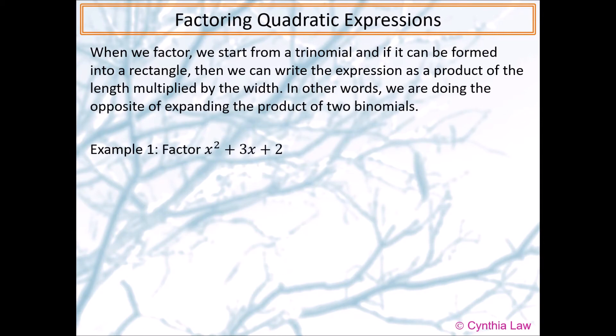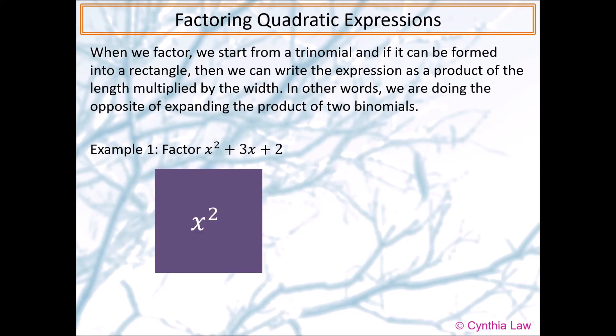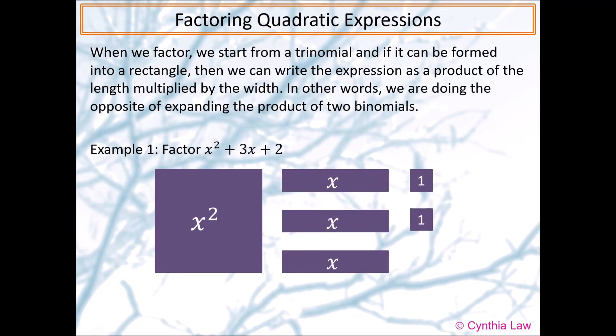Example 1. Factor x squared plus 3x plus 2. We know that we have one large purple square, three purple rectangular strips, and two small purple squares. The question is, how do we make a rectangle using these pieces? Pause the video and think about how you can make a rectangle.